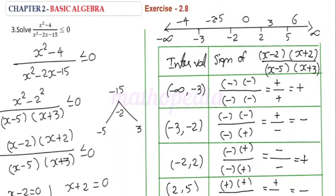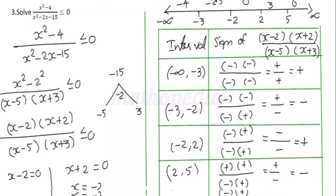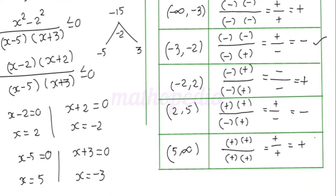Now see the question: (x² - 4)/(x² - 2x - 15) ≤ 0. All intervals with a negative sign are the answer. We have negative signs in (-3, -2) and (2, 5). Since the inequality is ≤ 0, we include the endpoints where the numerator is zero (x = ±2). So, x ∈ [-3, -2] ∪ [2, 5).